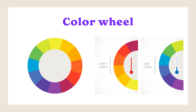Now moving on to the color wheel. The color wheel is a visual representation of colors organized in a circle, which helps us understand the relationship between different colors and facilitates color combinations. In a typical color wheel, the arrangement starts with yellow, followed by orange, red, violet, blue, and green, forming a continuous cycle. By drawing a line through the center, we can separate the warm colors — reds, oranges, and yellows — from the cool colors — blues, greens, and purples — helping us understand color temperatures.